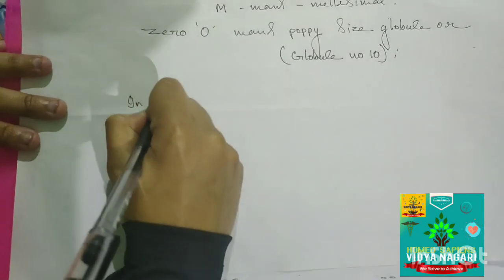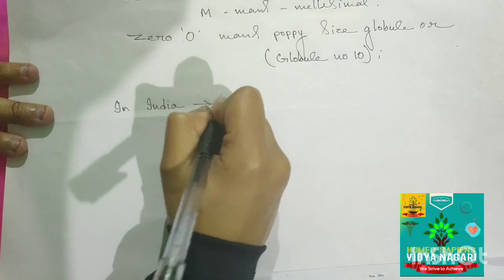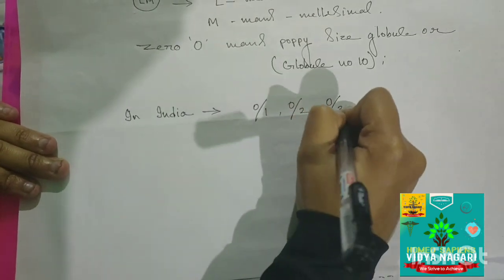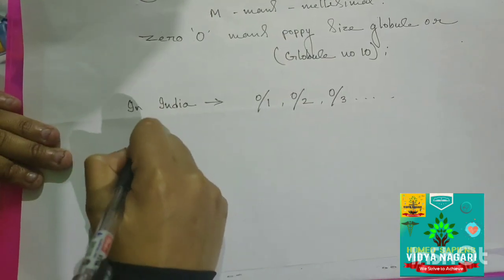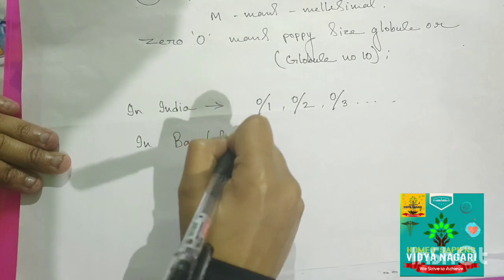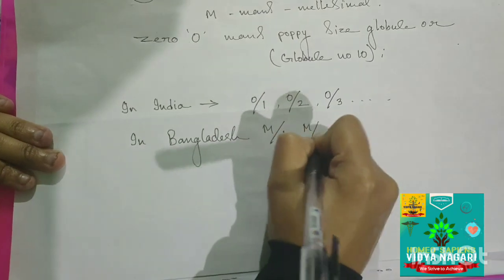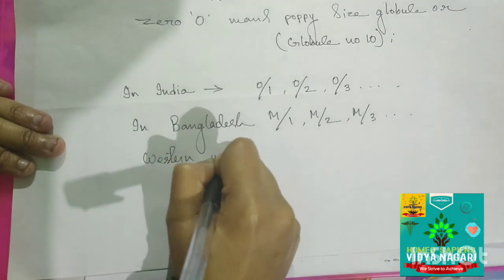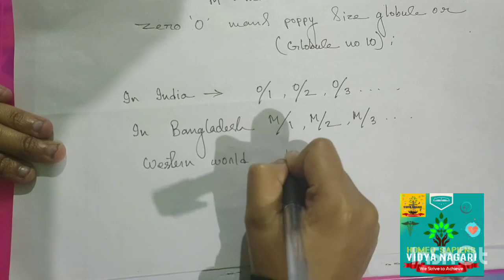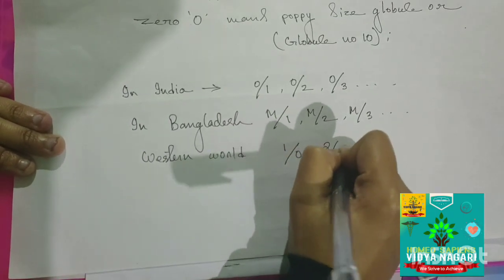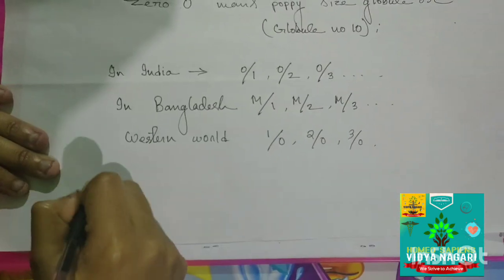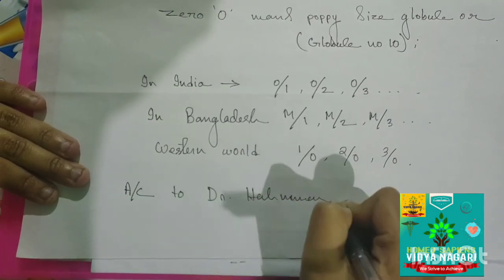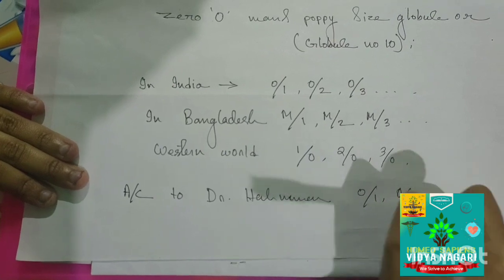In India, for 50 millisimal potency, we write 0/1, 0/2, 0/3, and so on. In Bangladesh, they write M/1, M/2, M/3. In the western world, they write 1/0, 2/0, 3/0. But according to Dr. Hahnemann, he mentioned it as 0/1, 0/2, 0/3.